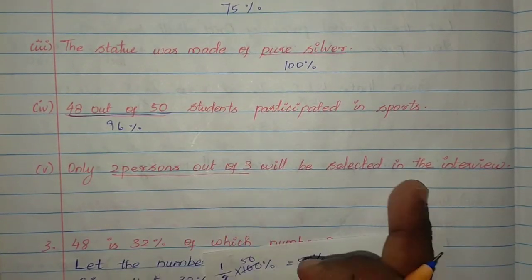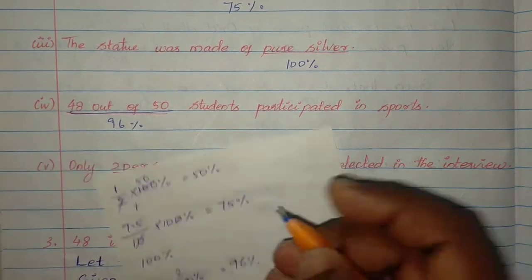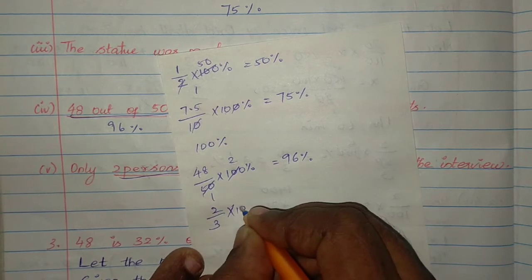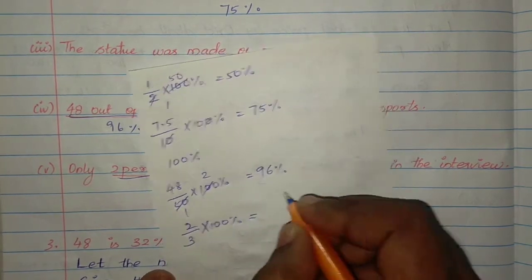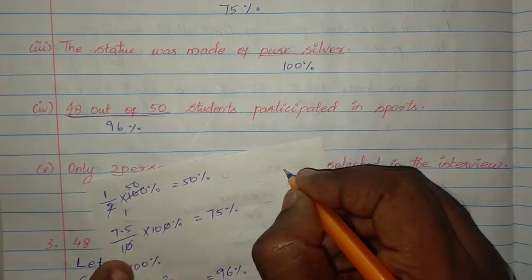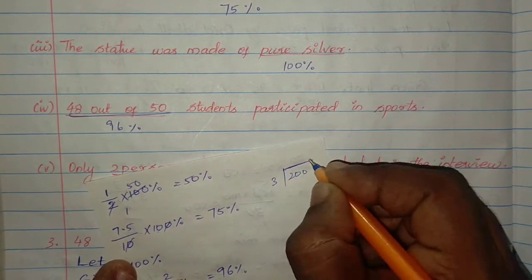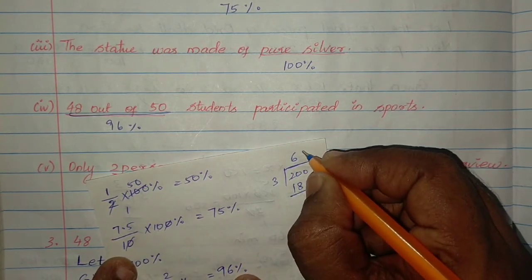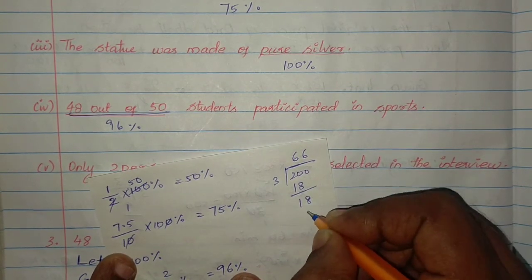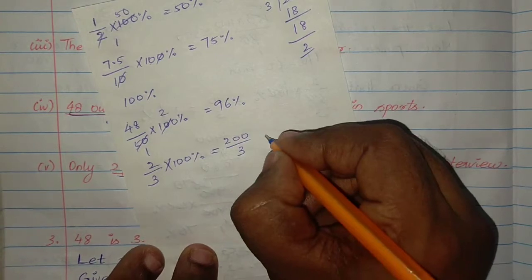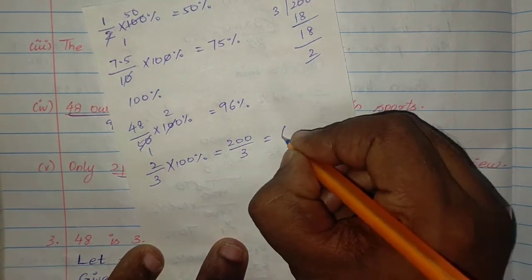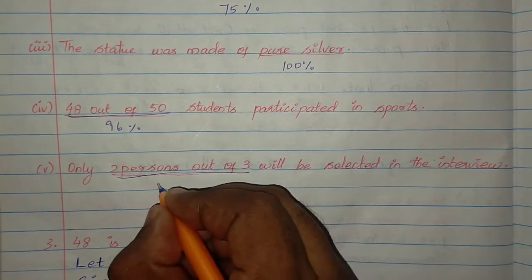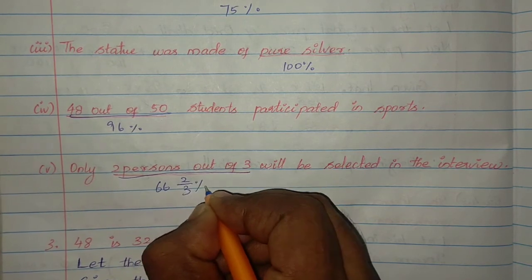Only 2 persons out of 3 will be selected in the interview. So 2 by 3 into 100%. Dividing: 3 goes into 200 — 6 times 18, balance 2. So the answer is 66 and 2 by 3 percent.